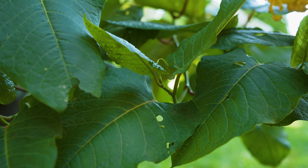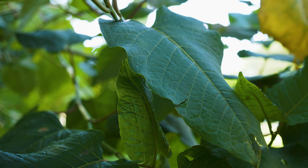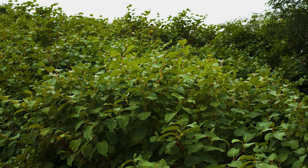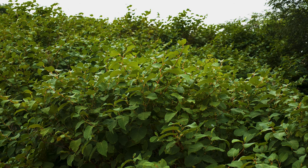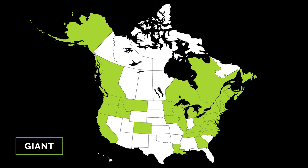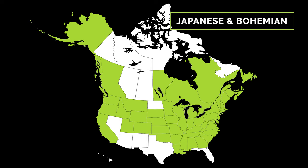In surveys of knotweed in the western United States, 15% were pure giant knotweed, 15% were Japanese knotweed, and 70% were the hybrid bohemian knotweed. The northeastern US appears to have a greater proportion of pure Japanese knotweed. Giant knotweed is largely absent from central states and provinces in North America. Because of the frequency of misidentifications, distribution info for Japanese and bohemian knotweed is usually lumped together.